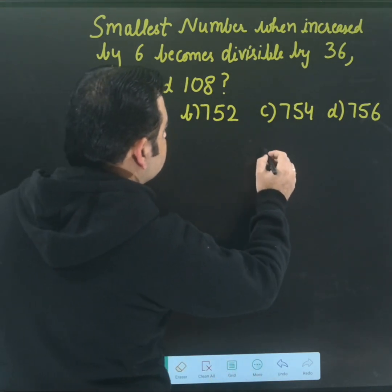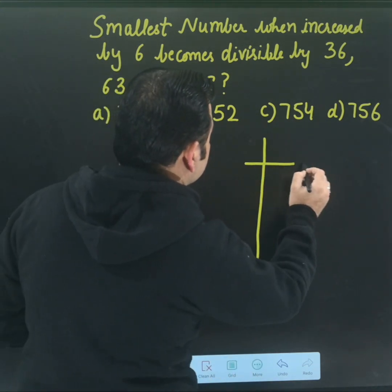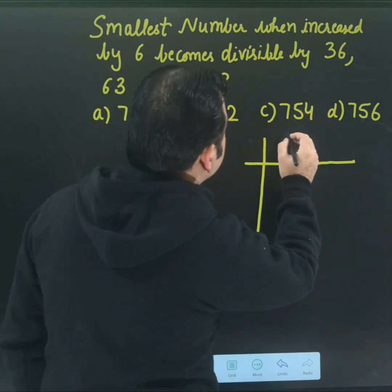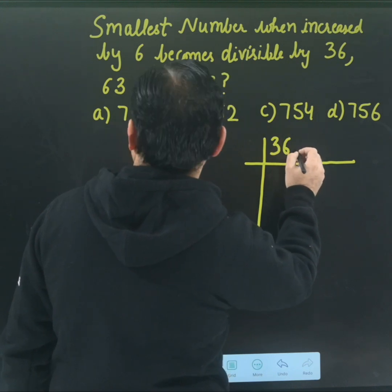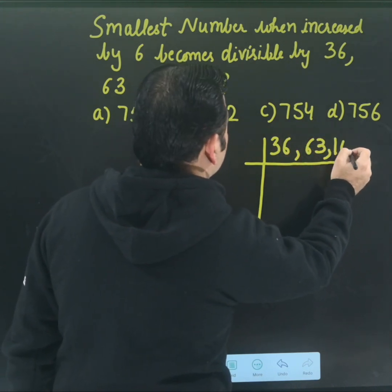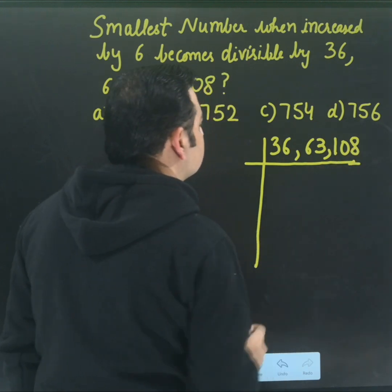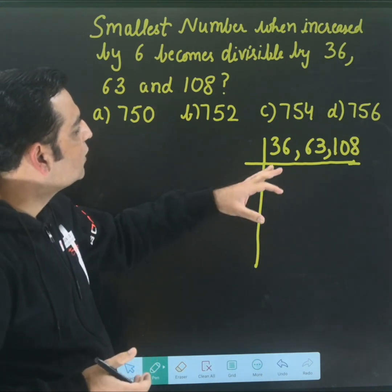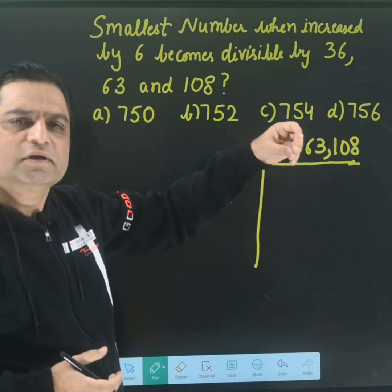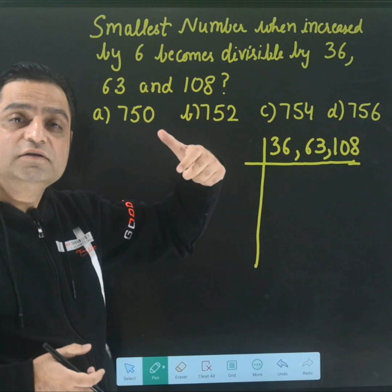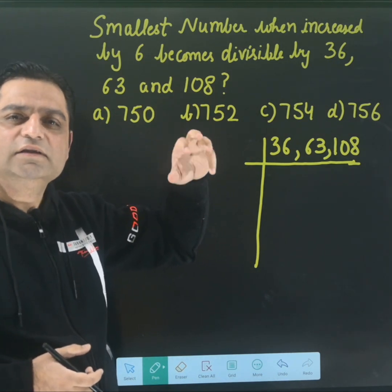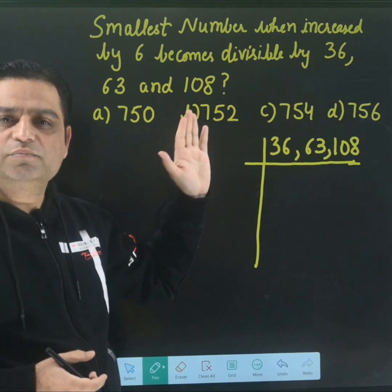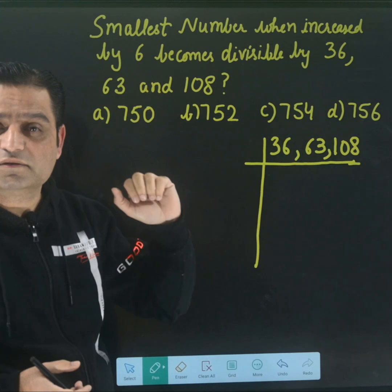Finding the LCM — I am going to use the division method. Those who are not aware how to find LCM using the division method, please check carefully. First number is 36, second is 63, and then 108. There are multiple ways, but if teaching small kids, we say do it with primes. You can do with any prime — keep doing with primes and at least it will get you the correct answer.